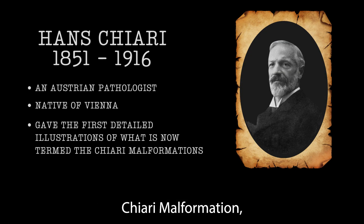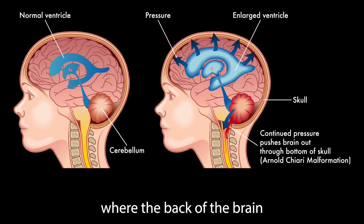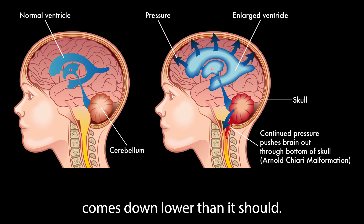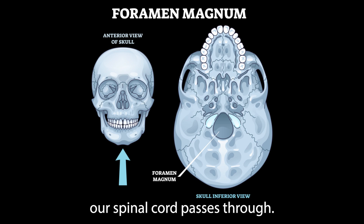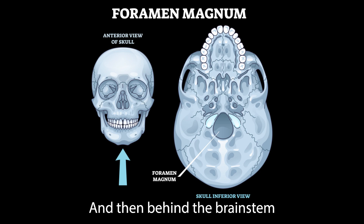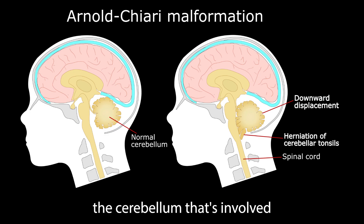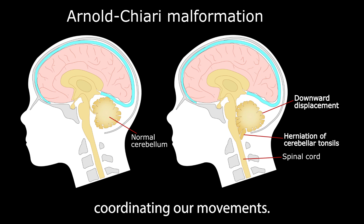Chiari malformation, named after somebody named Chiari, is a situation where the back of the brain comes down lower than it should. At the base of our skull there's a hole called the foramen magnum that our spinal cord passes through. Just above that is the bottom of the brain called the brainstem, and behind the brainstem is a part of the brain called the cerebellum, which is involved with coordinating our movements.